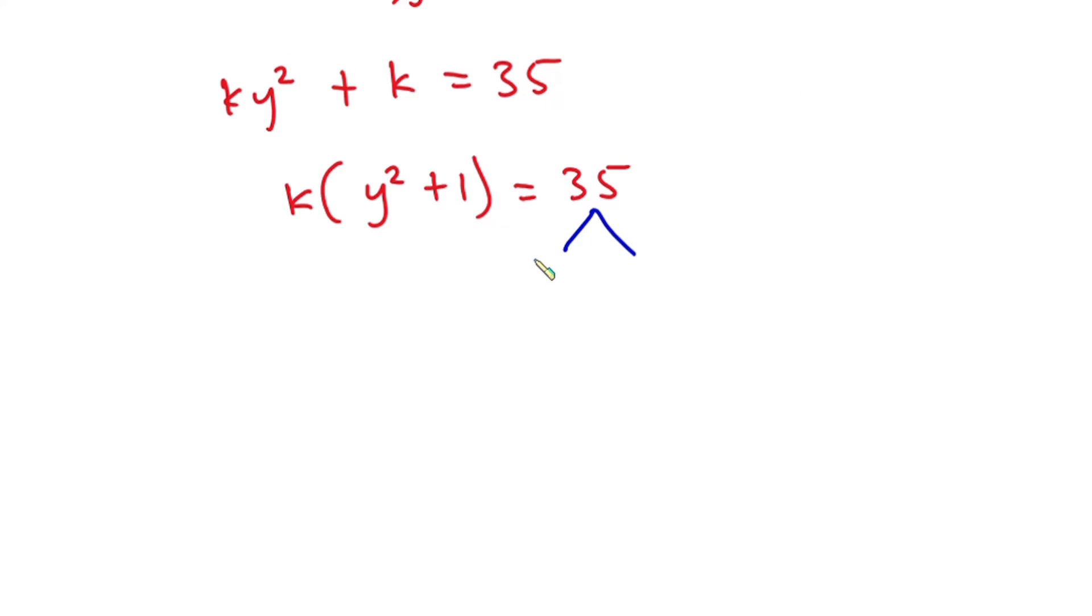This 35 is the same as 1 times 35, and it is also the same as 5 times 7. Now let's pay attention to what is in the parenthesis here: y² + 1.